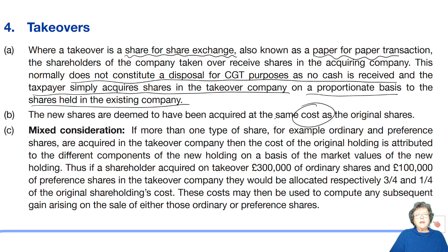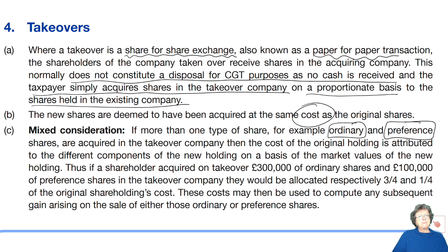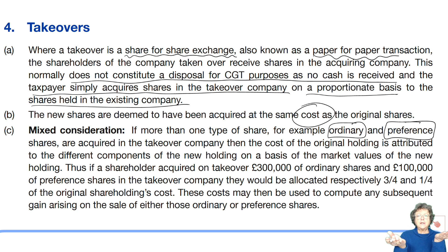You're not going to get one of those in the exam because that's too simple. Mixed consideration — this is where there is either one or more different types of share, for example, ordinary and preference. So you had just ordinary Blue shares and now you've got ordinary and preference shares. If these cost you £10,000, these two cost you £10,000 too, but you need to proportion the cost between those two shares in case you sell one or the other, because the whole thing still costs £10,000.